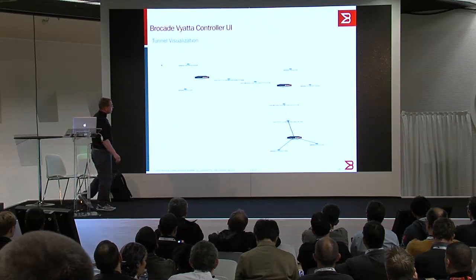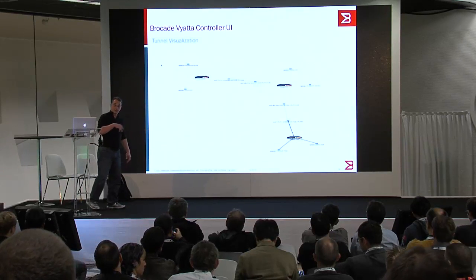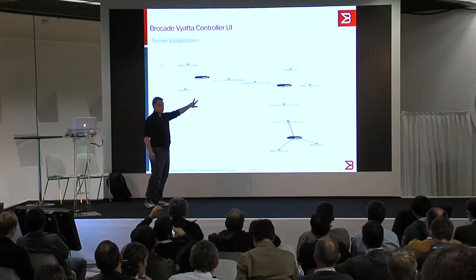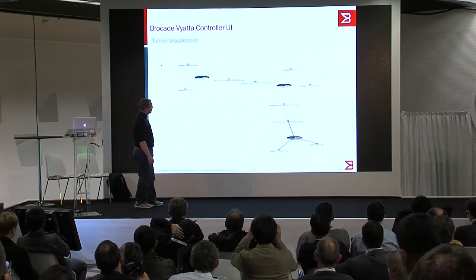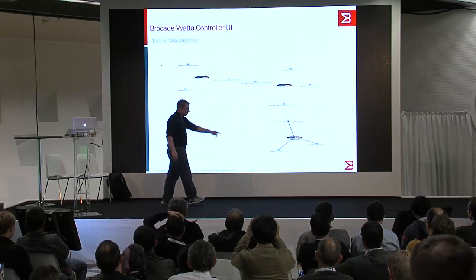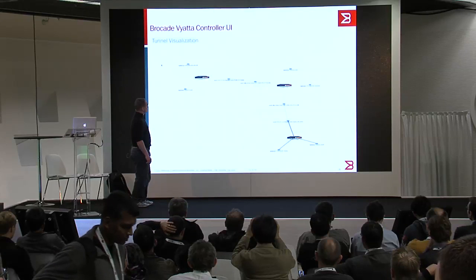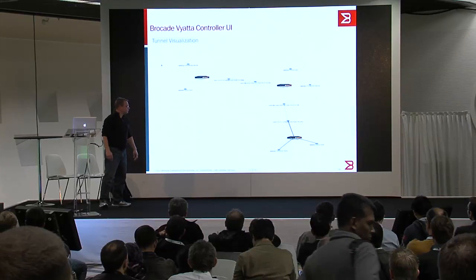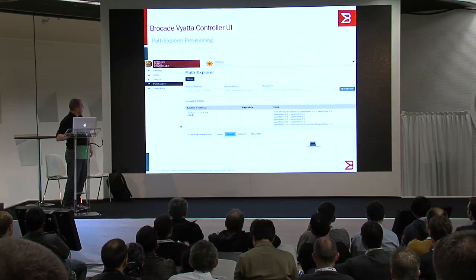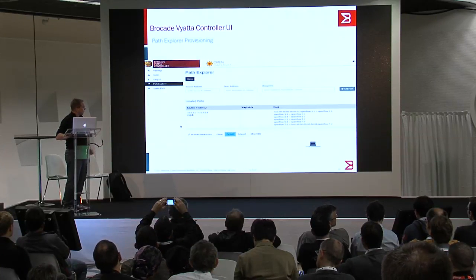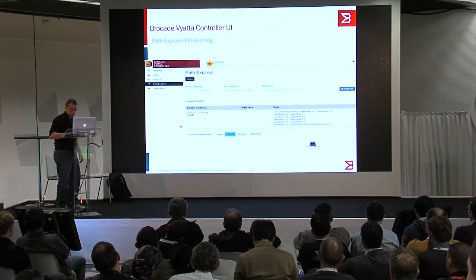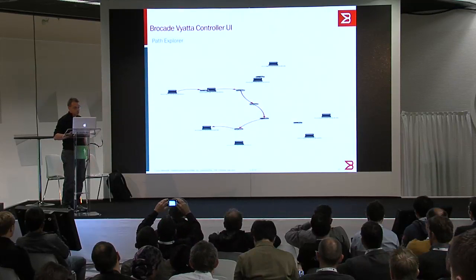This is the Path Explorer app — a tunnel visualization application. This is showing your Viata V routers with the tunnel that's running between two sites, and here's another tunnel running between the other two sites, with the end VMs and their stub networks hanging off of there. This is showing how we're actually configuring these paths and highlighting the paths that were just configured.